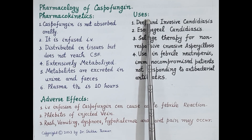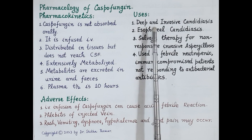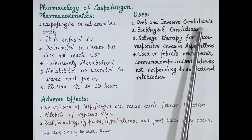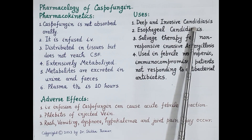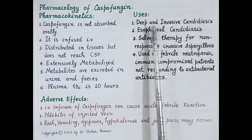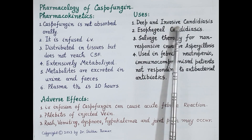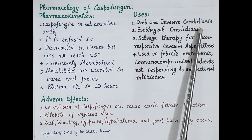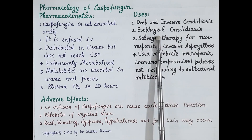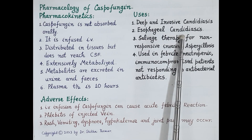Now, uses of caspofungin. The first use is treatment of deep and invasive candidiasis, also termed systemic candidiasis, where candida causes serious infections affecting internal organs such as the heart, brain, eyes, and bones. Echinocandins are the main drugs used for this condition. It is also very effective in the treatment of esophageal candidiasis, which is candidal infection of the esophagus.